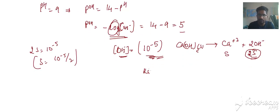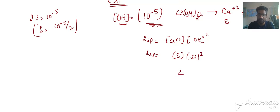Now we will write what is Ksp of this reaction. Ksp of this reaction will be concentration of Ca plus 2 into concentration of OH minus square. So Ksp is equal to s into 2s square, which is 4s cube.